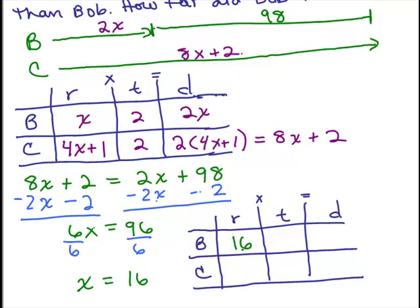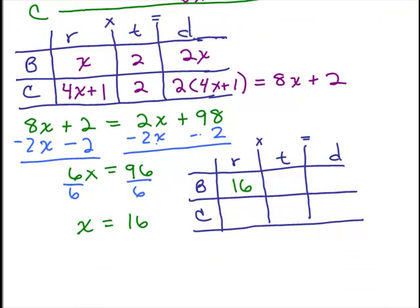How will we get Carlos' rate? It says 1 more than 4 times Bob's rate or 4X plus 1. So 16 times 4 and then add 1, that is 64 plus 1 or 65. So Carlos is going 65 miles per hour. That seems reasonable, 16 miles per hour for a biker and 65 miles per hour in the car.